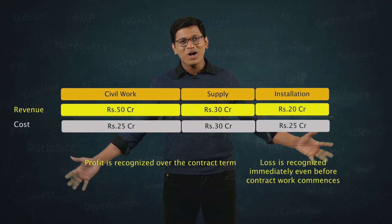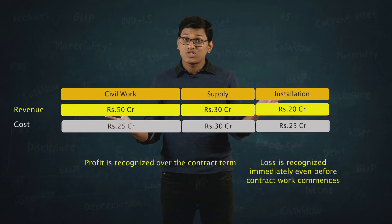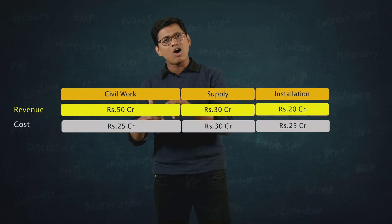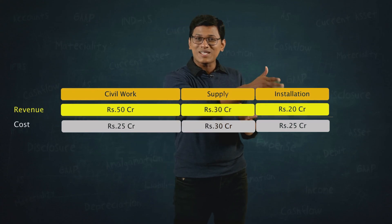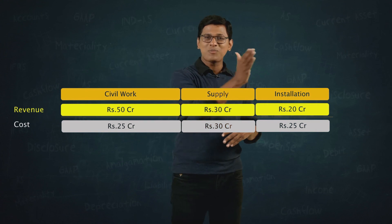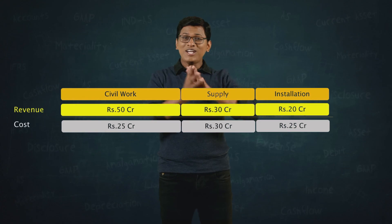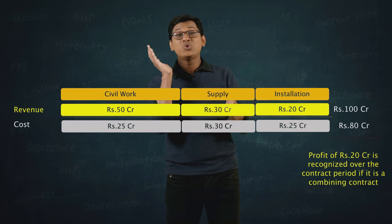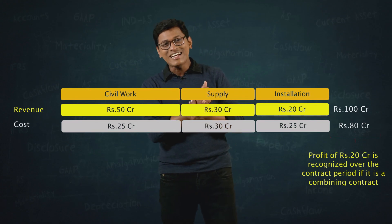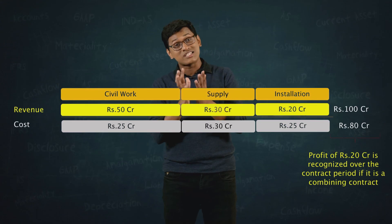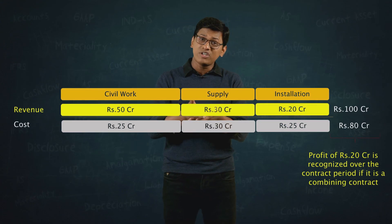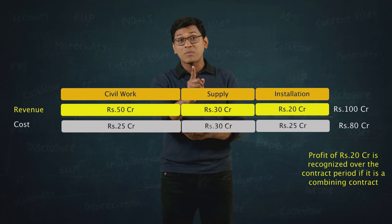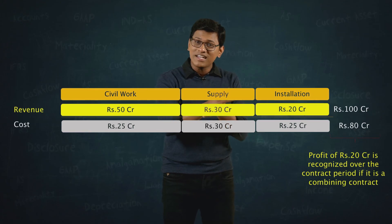On the other hand, if we view all these as a combining contract, the accounting standard says you are negotiating them together — you have to bid for all or none, accept all or none. In such cases, even though there are three separate contracts, view them as one contract: total up all contract revenues (100 crores) and all contract costs (80 crores), giving a combined estimated profit of 20 crores. You do not have to debit that 5 crores to P&L upfront. So, if it is a combining contract, profitability is assessed overall. If it is a segmenting contract, each contract is assessed separately, and any expected loss must be charged off fully immediately to P&L.